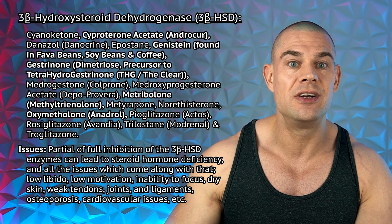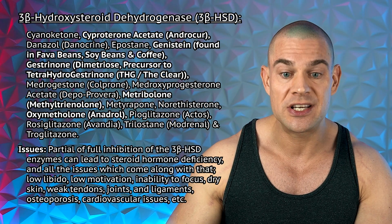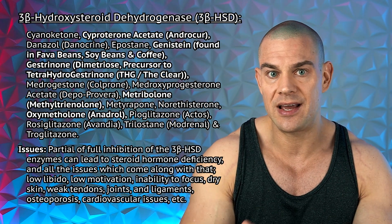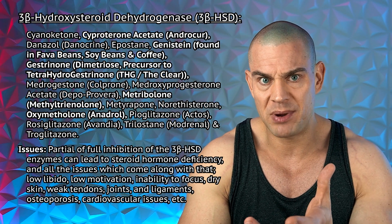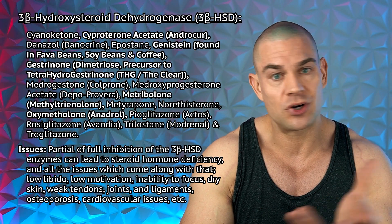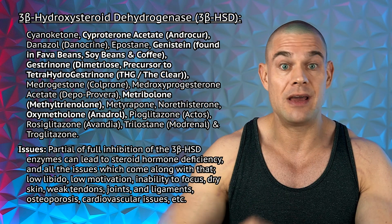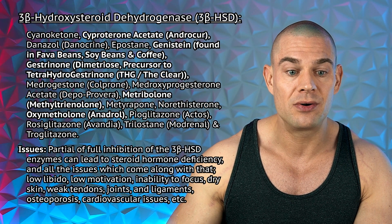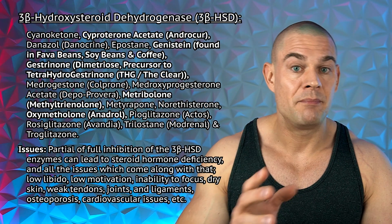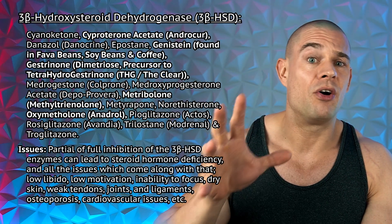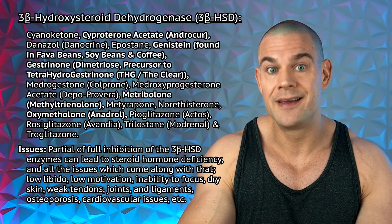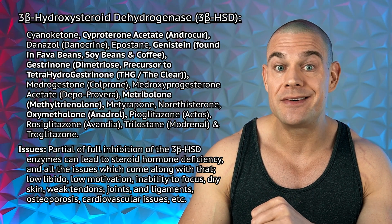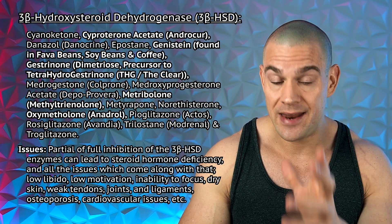Next is gestrinone, which is the foundation of tetrahydrogestrinone, also known as THG or 'The Clear,' which was used to beat drug tests back in the day. This is a progestin-based anabolic steroid, so the HPTA would be shut down anyway, but it still inhibits some of the earlier steps in the sex hormone cascade. It's the same for metribolone, also known as methyltrienolone — basically the 17-alpha-alkylated version of trenbolone — and oxymetholone/Anadrol, which are potent 3-beta-hydroxysteroid dehydrogenase enzyme inhibitors.